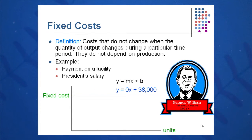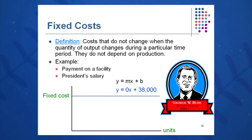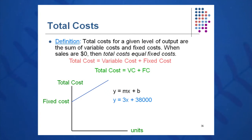Fixed costs are a little bit different — they don't change regardless of output. So if I make one unit or 10,000 units or 50,000 units, it really doesn't matter. I'm still going to pay the president the same amount or pay the rent the same amount, in this case $38,000. This curve takes the form y equals 0x plus 38,000 — a zero slope and a y-intercept of 38,000. We can add variable cost plus fixed cost to get a total cost curve: y equals 3x plus 38,000.